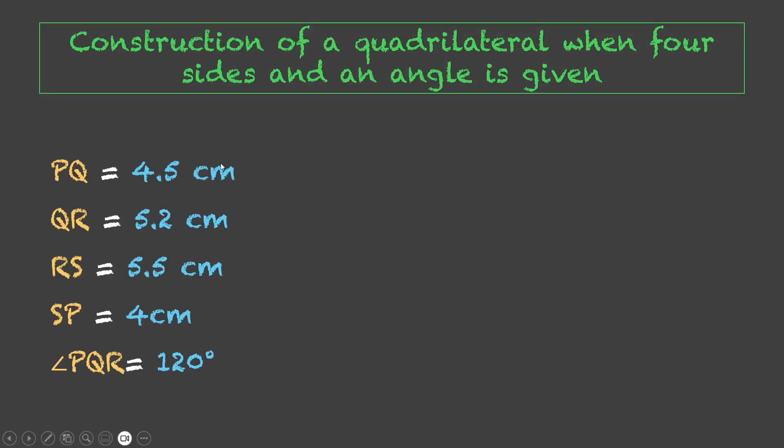We have been given certain dimensions of a quadrilateral PQRS. Now in order to construct a quadrilateral, we need to have at least five conditions or dimensions given to us and if we look over here, we do have four sides and an angle, a total of five conditions.